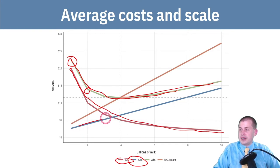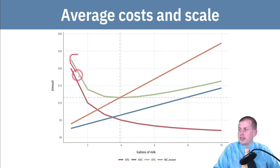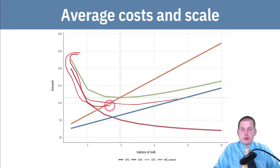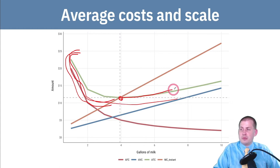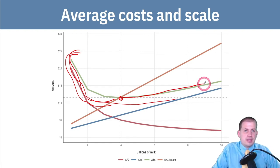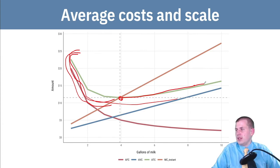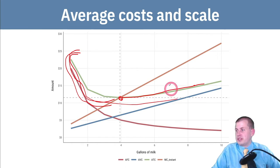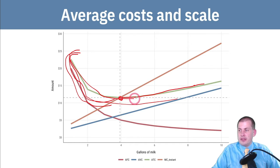The blue line — variable costs — is going up constantly. The green line, average total cost, is what we care about most. In the early stages of creating stuff, it actually becomes cheaper and cheaper. Then you hit some sort of inflection point, and then it starts getting more and more expensive. This shape is a very common shape for costs, assuming you just have one factory.